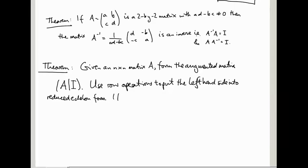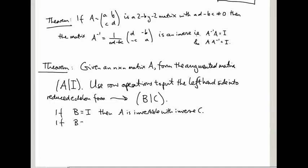So the conclusion of the theorem is, if the result, I should give a name for the result. Okay, so you're going to end up with something of the form B, C, for some matrices B and C. So if B equals the identity matrix, then A is invertible with inverse C. If B is not the identity matrix, then A is not invertible.